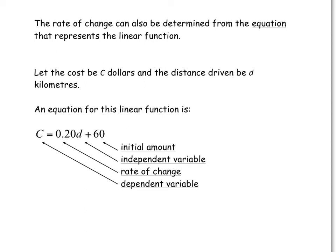An equation for this linear function would be C equals 0.20D plus 60. So 60 would be your initial amount. That's a constant. That's the number we've paid no matter what. To rent this car, we owe $60. Now, we pay 20 cents per distance, so per kilometer traveled.